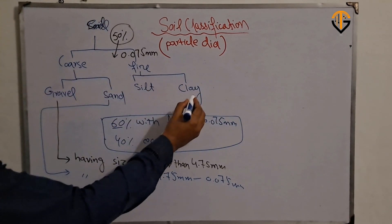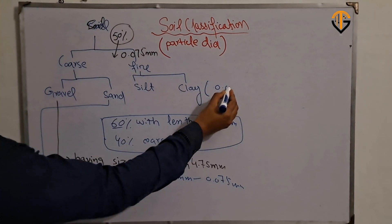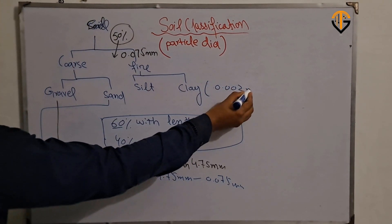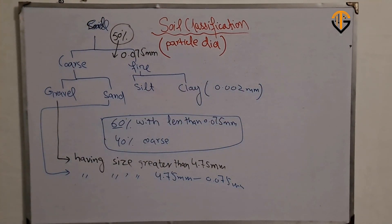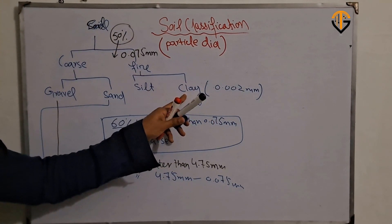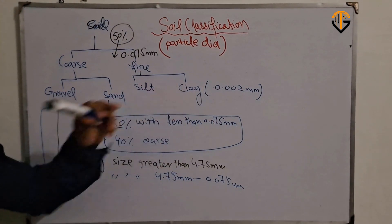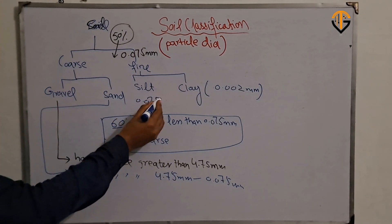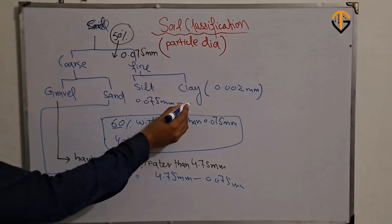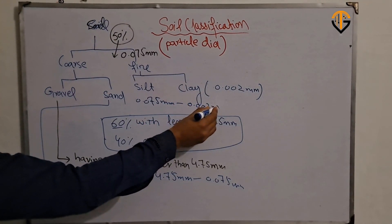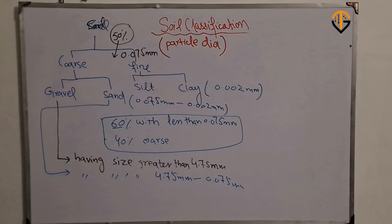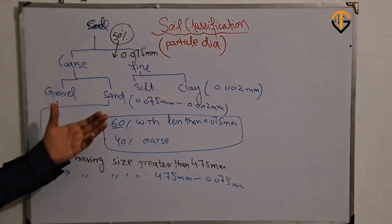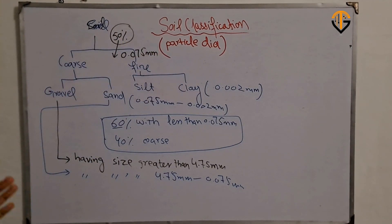Particles having size less than 0.002 mm are known as clay particles. Particles having size between 0.075 mm and 0.002 mm are known as silt content. In this way we classify soil types based on particle diameters.